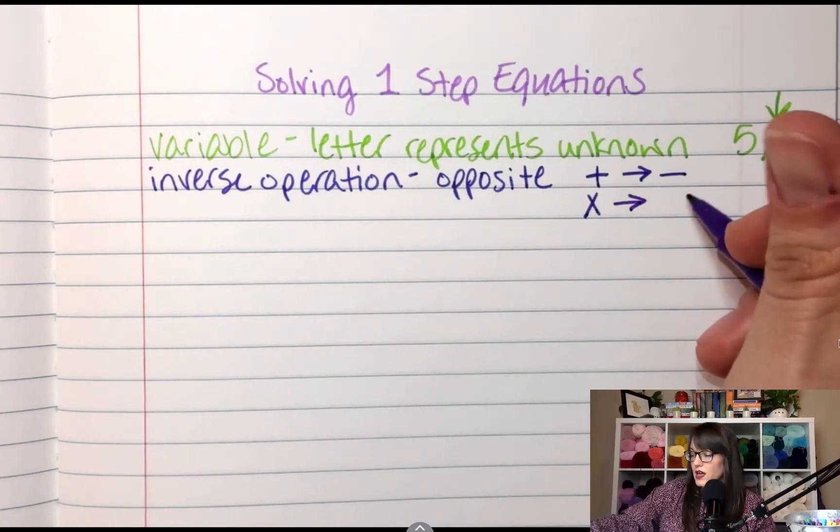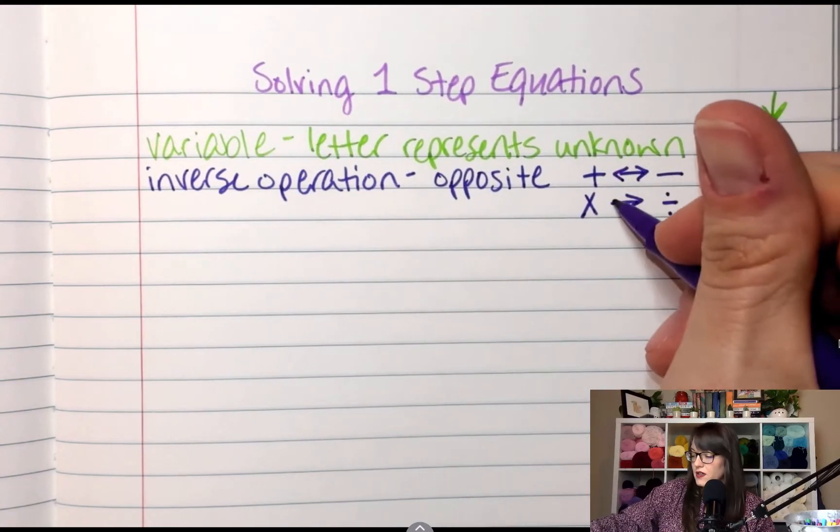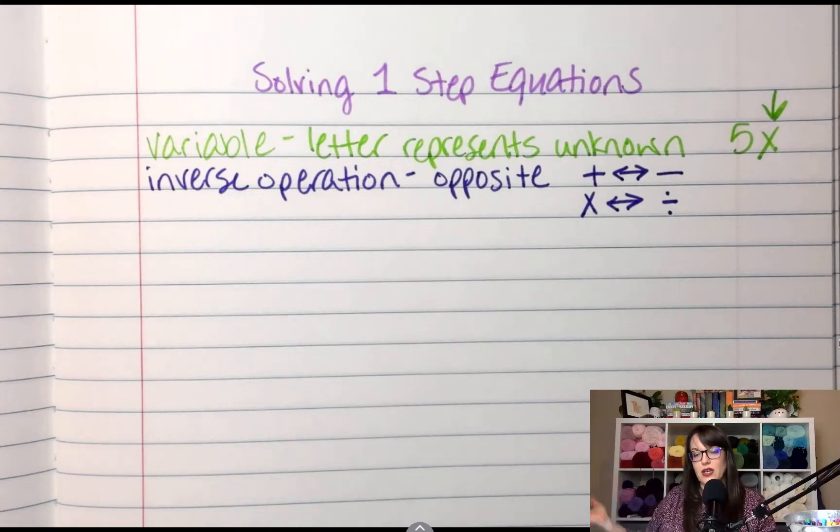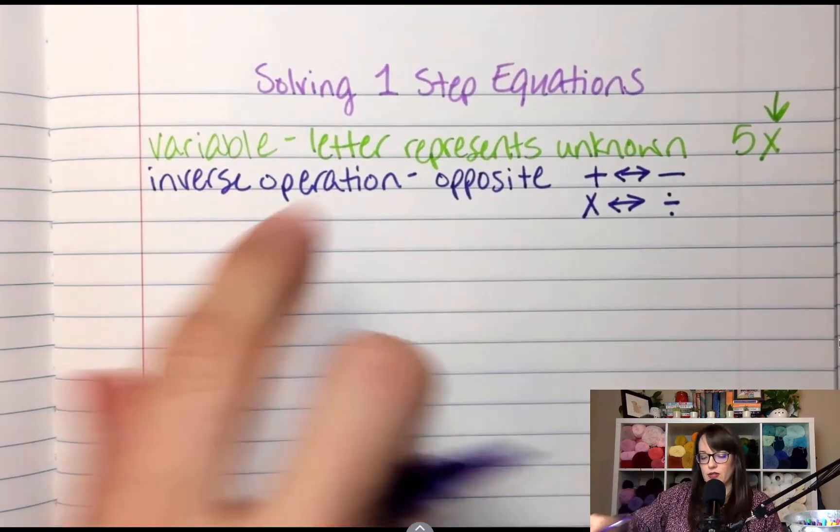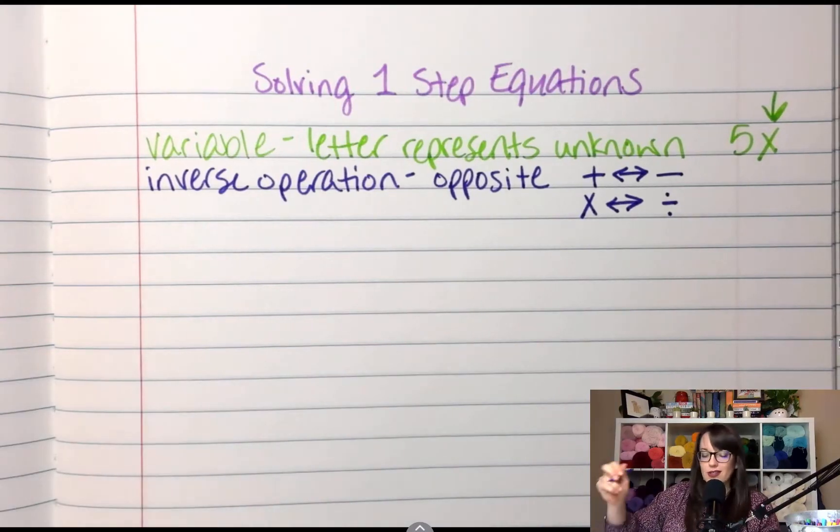So the opposite of subtraction is addition, the opposite of division is multiplication. So when I'm solving one-step equations, I'm going to work backwards. Let's just jump right in.